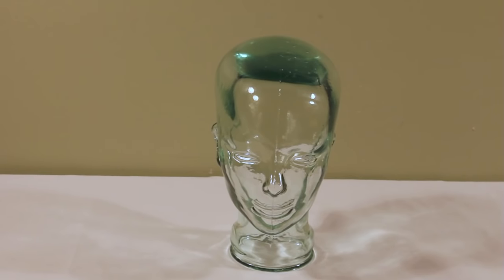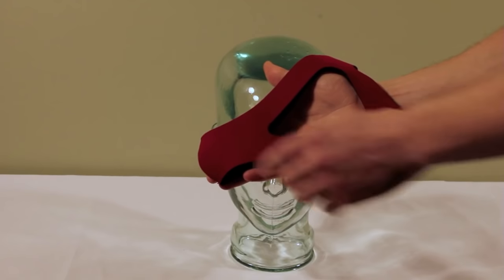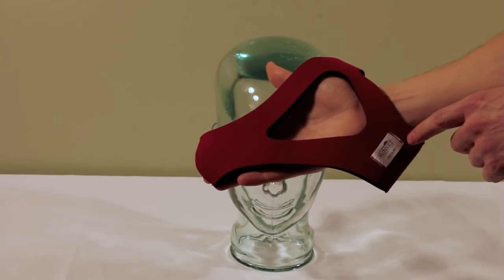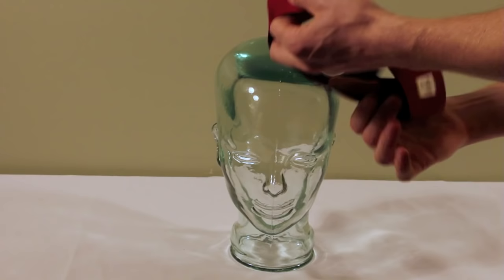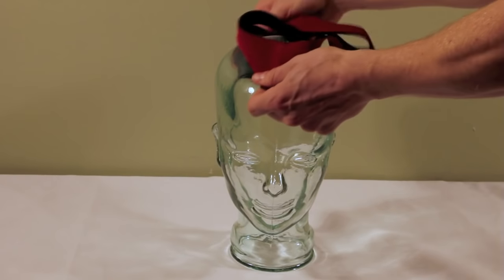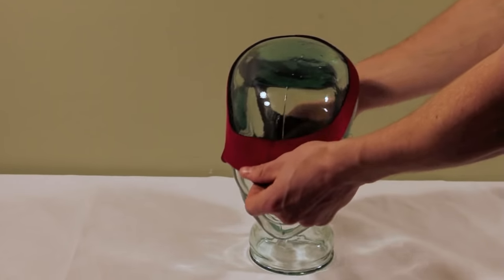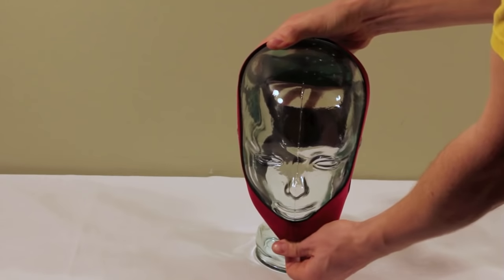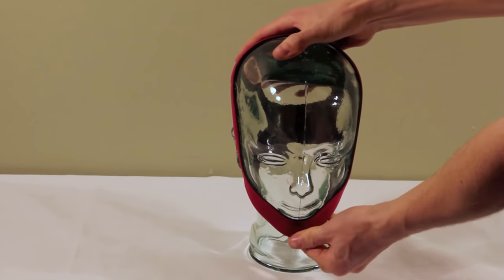Now I am going to demonstrate how to fit the new ruby chin strap. You want to keep this curved edge in the front of the patient and make sure that the tag remains in the back. Then you are simply going to slide it over the patient's head until the curved edge securely cups the patient's chin.